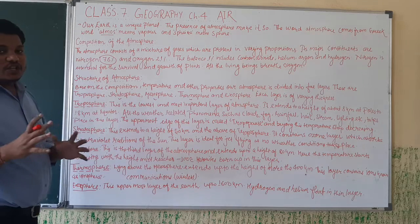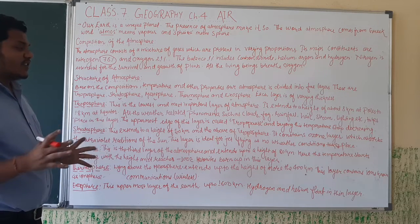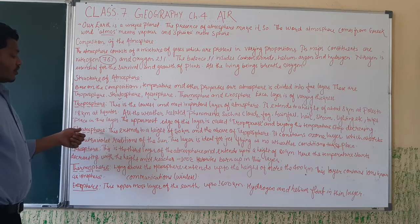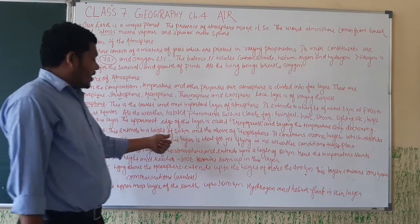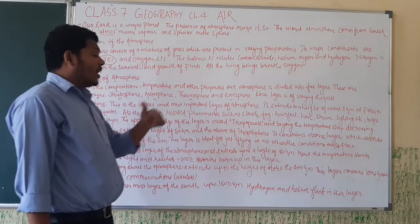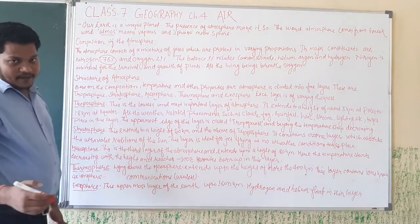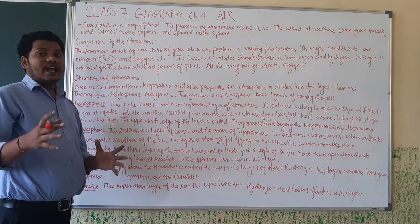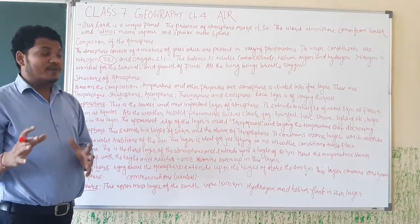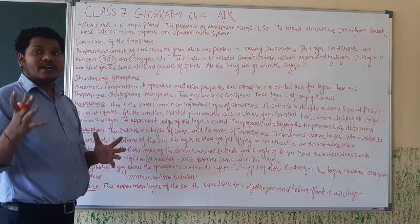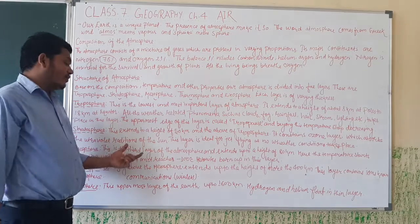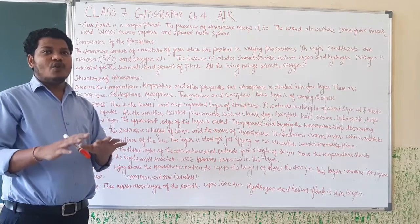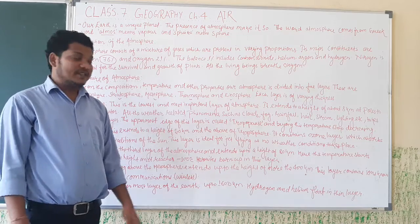The end part of the troposphere is called the tropopause, beyond which the temperature stops decreasing. The next layer is the stratosphere, which extends to a height of 50 km above the tropopause. It contains the ozone layer, which helps protect us from the ultraviolet radiation of the sun.